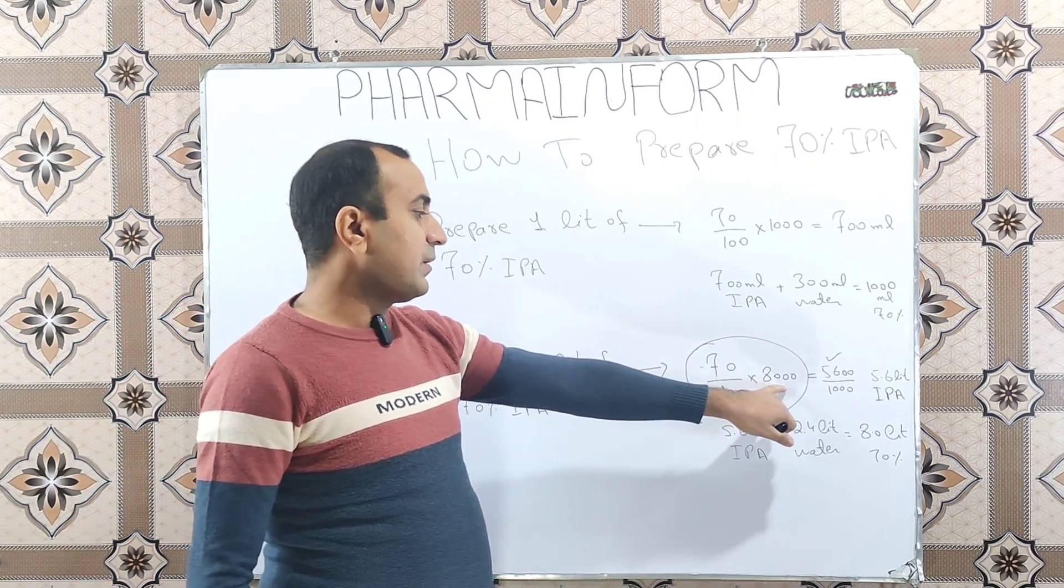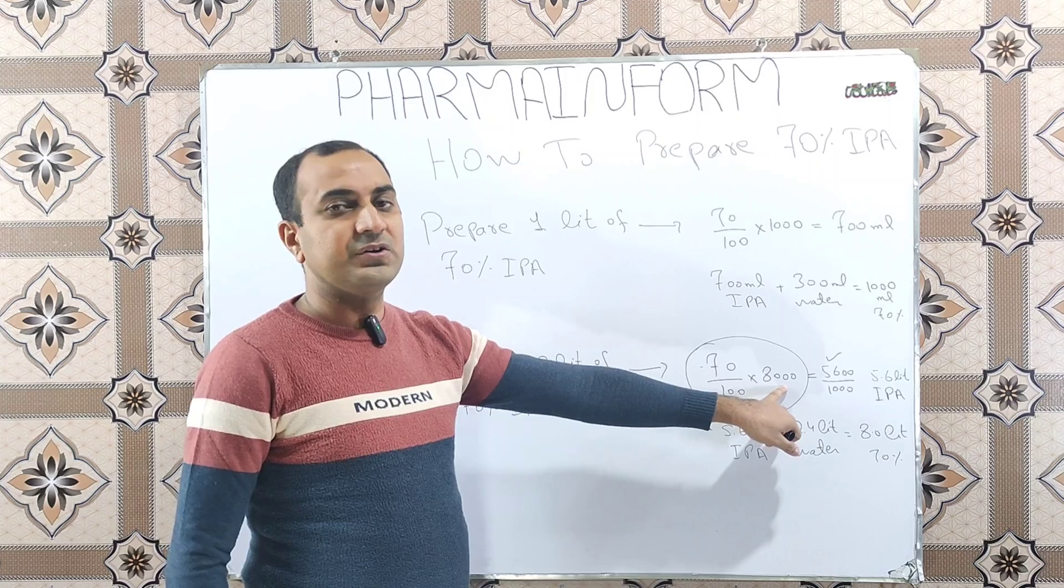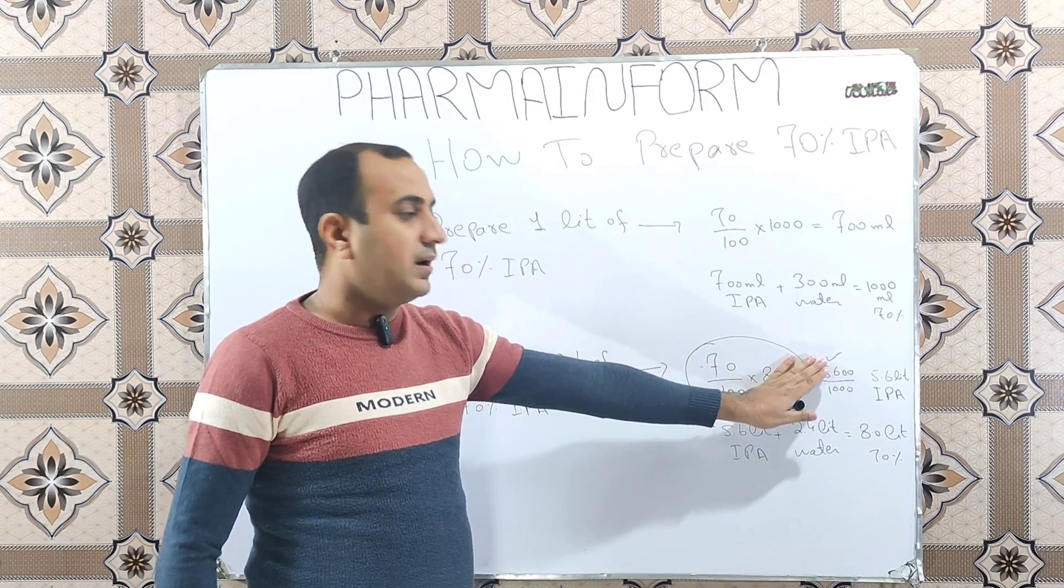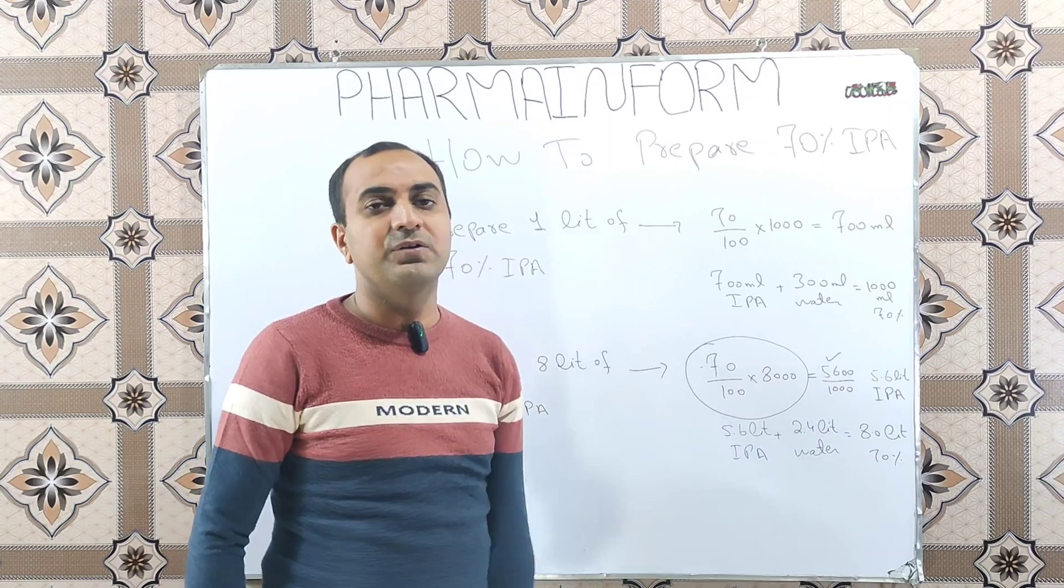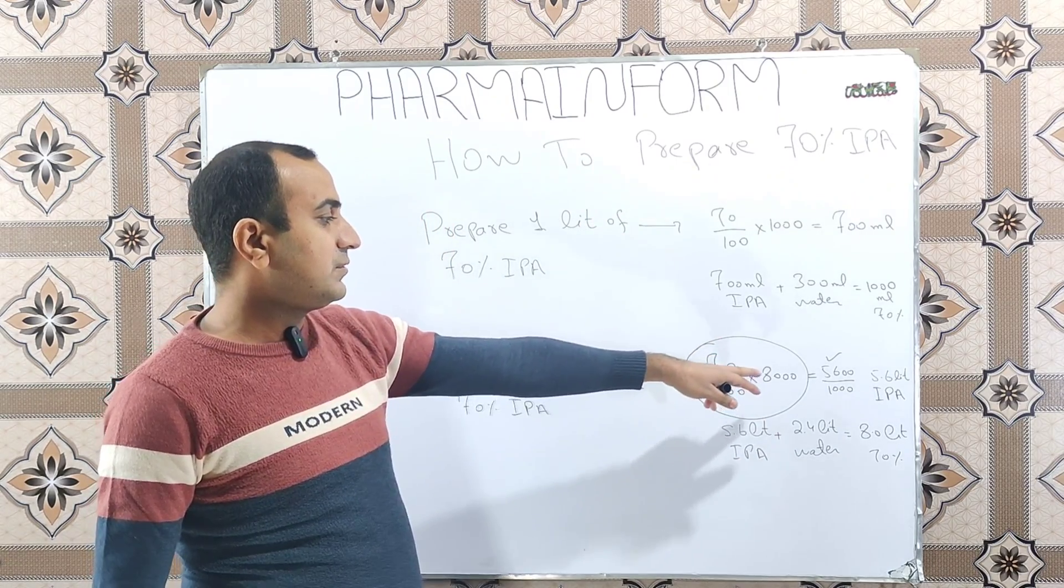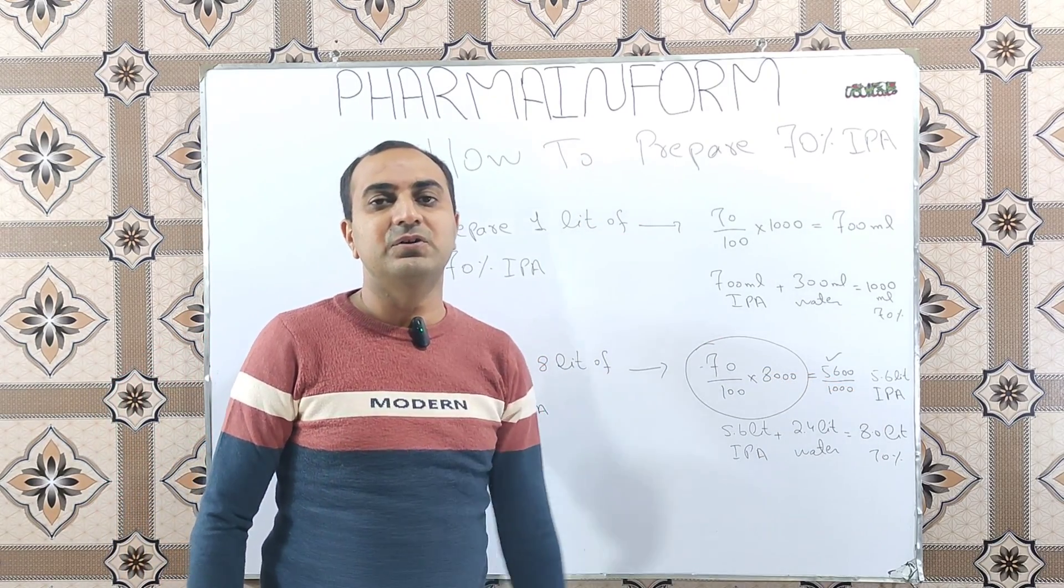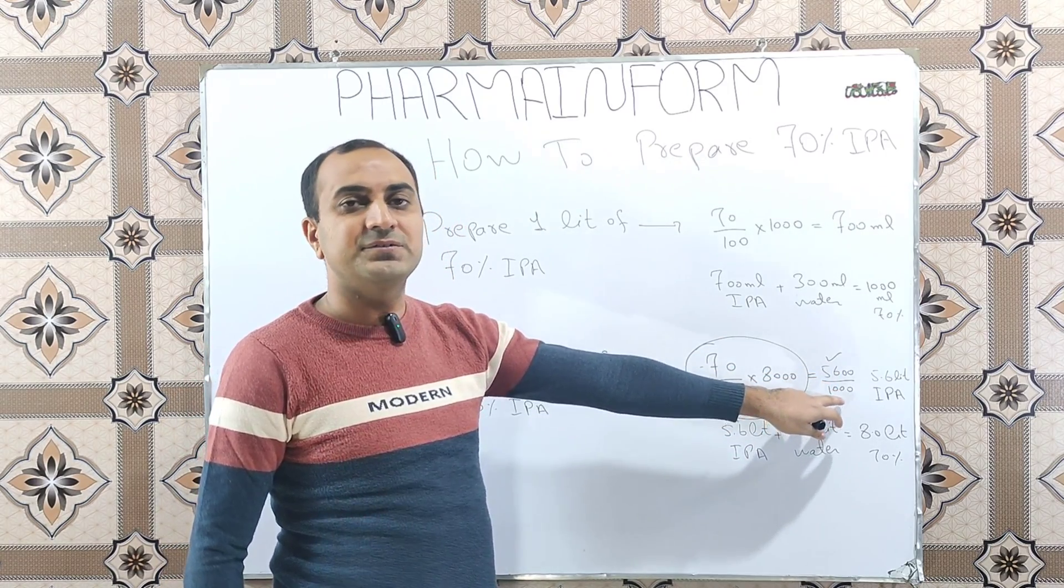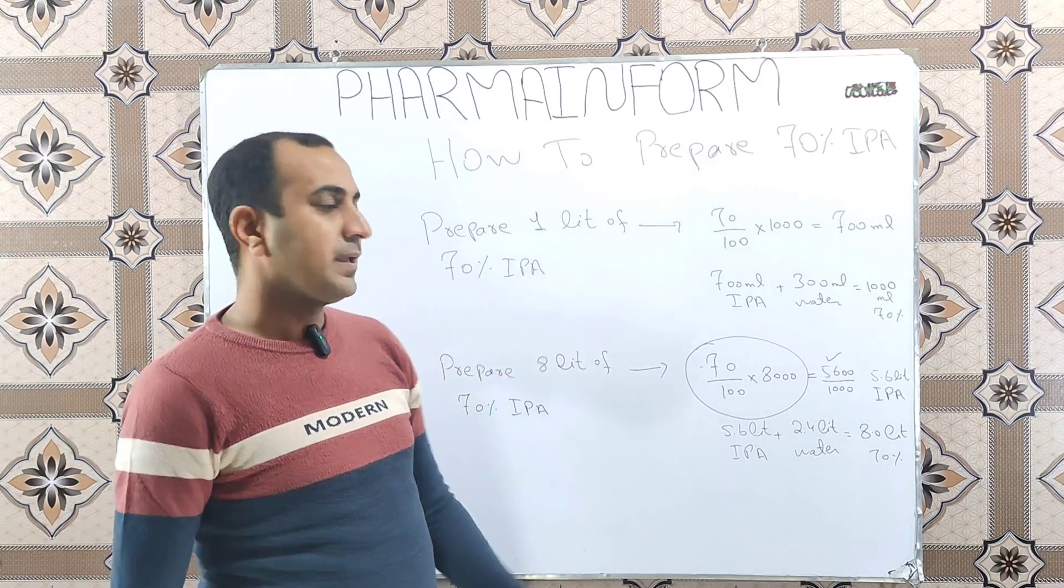You can use this formula directly for liters, which is 70 over 100 into 8, the answer will be directly 5.6 liters. But for small quantities, it's better to convert it first into ml, then again convert it into liters.